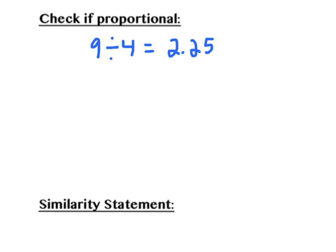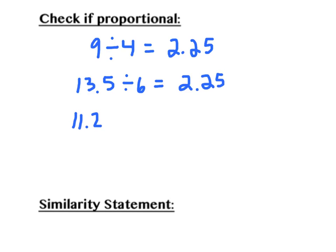Our next ratio is 13.5 over 6, which means 13.5 divided by 6, which is in fact equal to 2.25. And last but not least, we have 11.25 over 5, which means 11.25 divided by 5 — and that is also equal to 2.25.